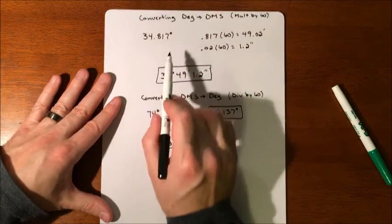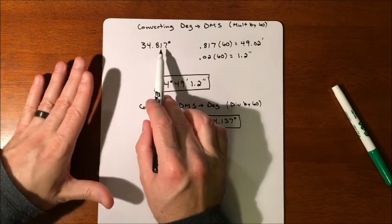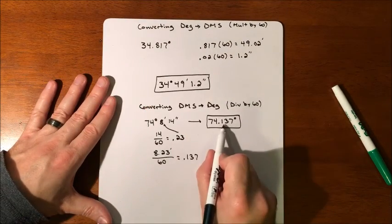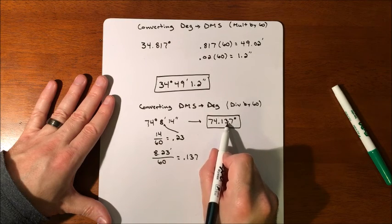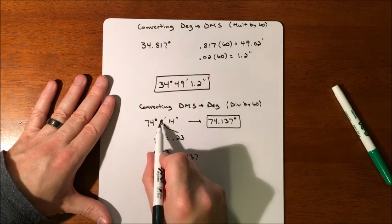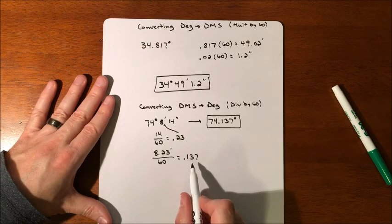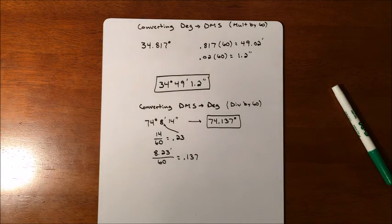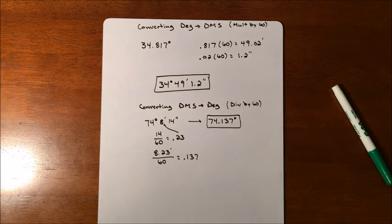So again, I kind of compare it to up here where this is about like 81%. So this is 13.7% of an hour, which would make 8 minutes and 14 seconds. And that is degrees, minutes, and seconds. Thanks.